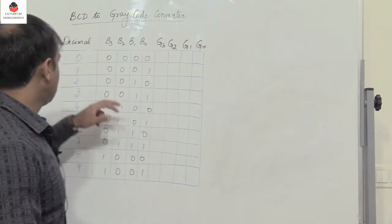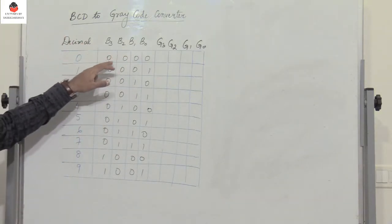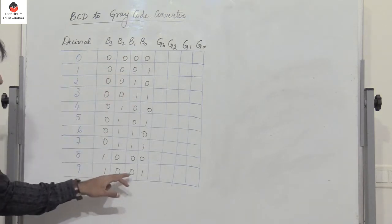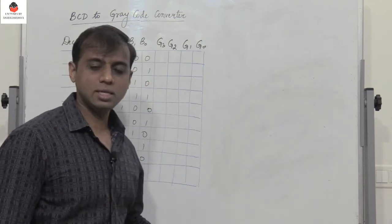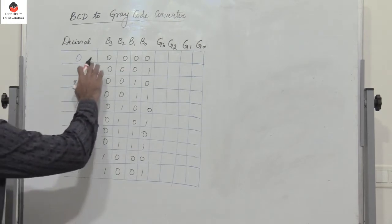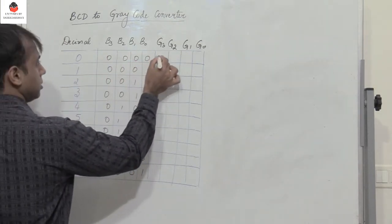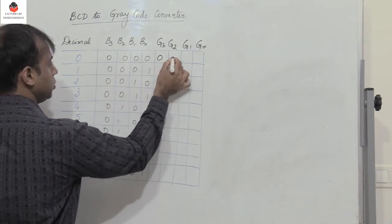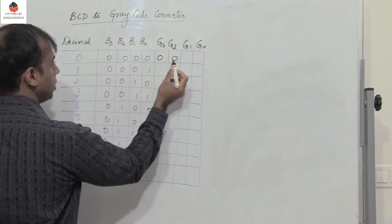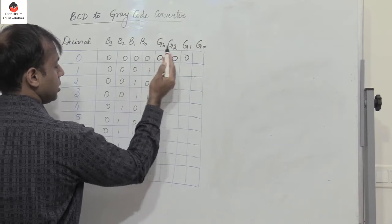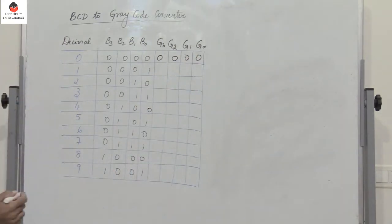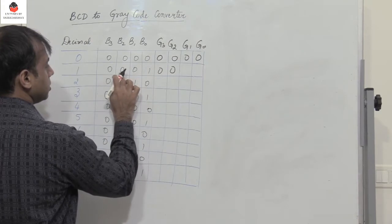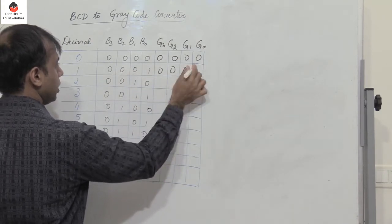We have the BCD representation, the 4-bit representation for 0 to decimal 9 as 0000 to 1001. To convert binary to gray, write the first binary digit as it is and take the XOR. So G3 is B3, G2 is B3 XOR B2 which is 0, G1 is B2 XOR B1 which is 0, and G0 is B1 XOR B0 which is 0. For the next row, G3 is B3, then 0 XOR 0 is 0, 0 XOR 0 is 0, 0 XOR 0 is 1.